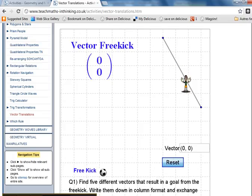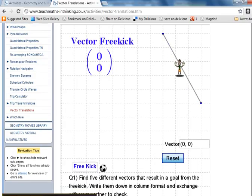You need to find five vectors that result in the goal scoring. Obviously you've got to avoid the keeper as well. You'll get a little message if you're successful. That's the task. Enjoy.